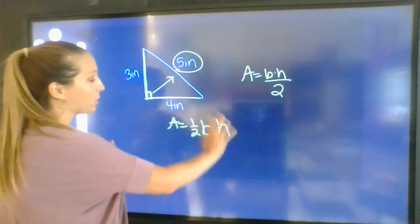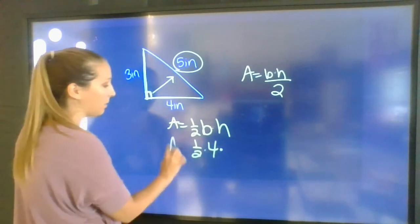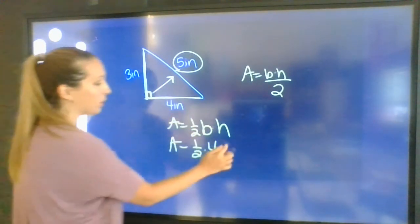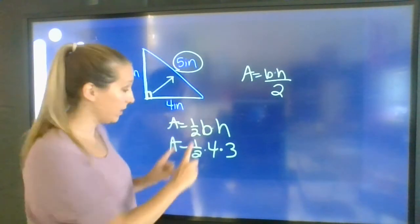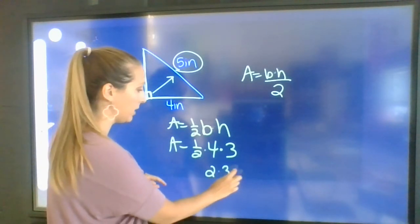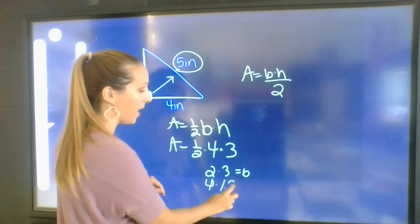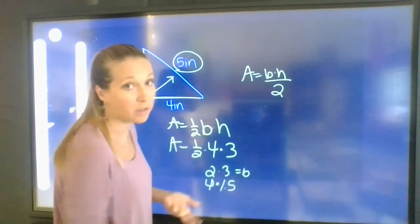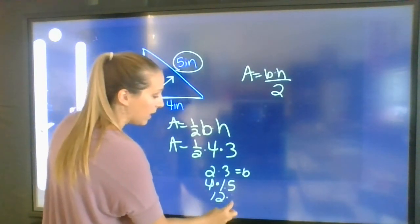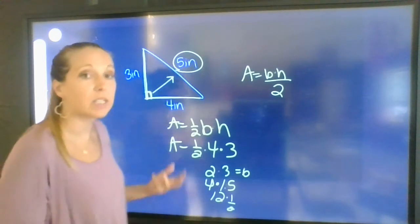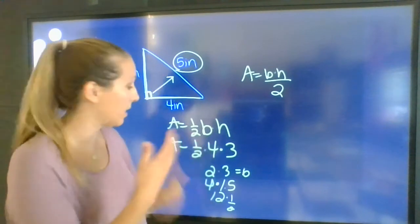So here we have A equals 1/2 base times height. Our base is 4, so we're going to put 4 in the place of B. And our height is 3. Now, a lot of things we can do here. We can take half of 4 and get 2 and then say 2 times 3 is 6. You could take half of 3 and get 1.5 and so you're going to say 4 times 1.5, that's also 6. You could multiply 3 and 4 and get 12 and then take half of it, which is also 6. So it doesn't matter how you do it as long as you get the same thing consecutively.